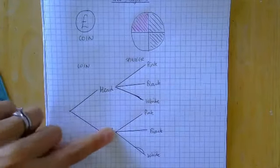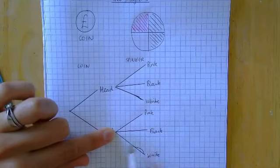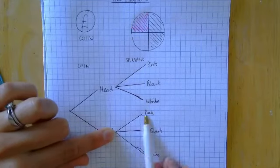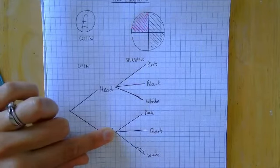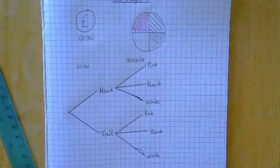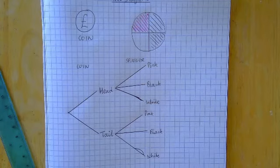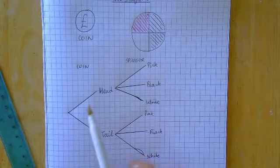So let's pretend I've got a tail — I walk along the tail branch. Now I spin my spinner, so I'm either going to get a pink, a black, or a white. To get more marks, we have to add the probabilities onto the branches of the tree diagram.